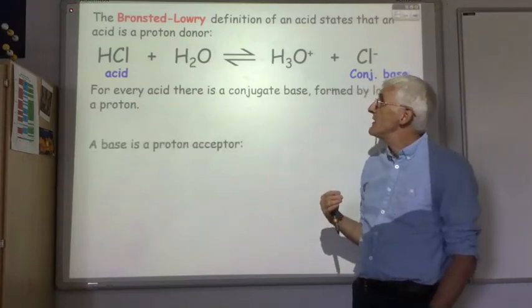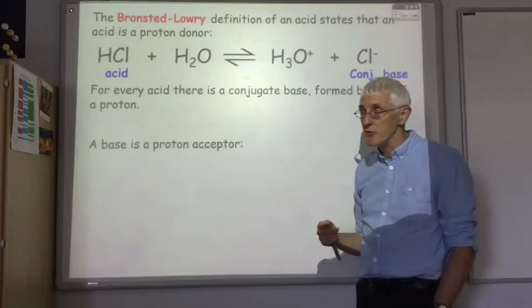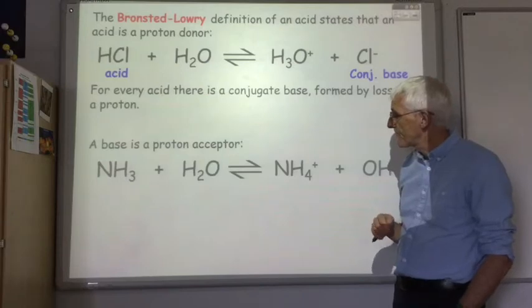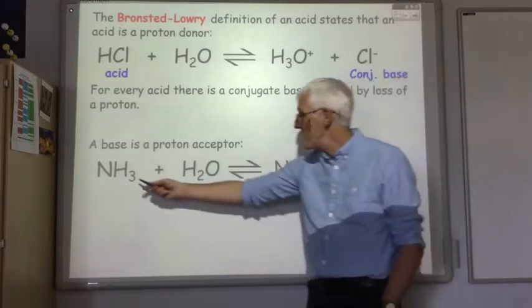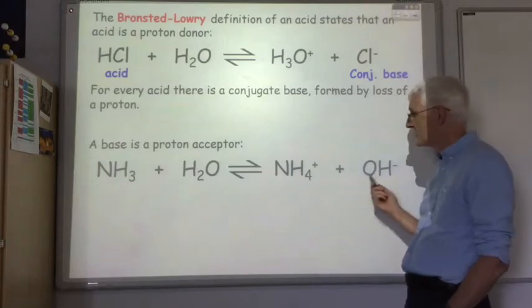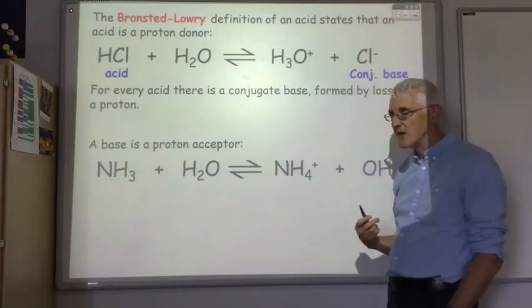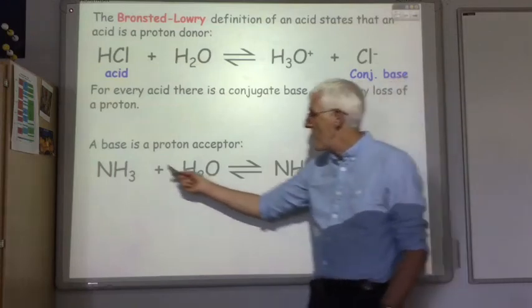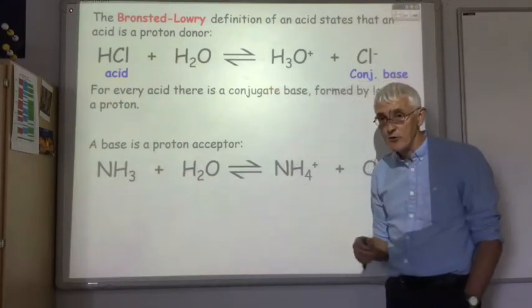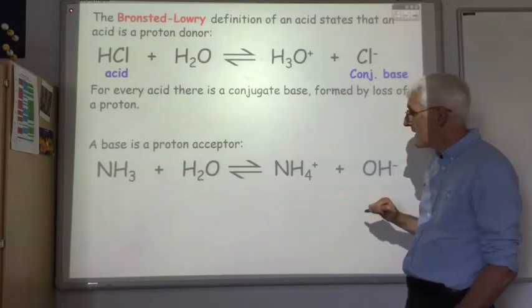Using the same theory, a base is something which accepts protons. So if we look at this example we've got ammonia here and water and we're producing ammonium ion and the hydroxide ion. So what's accepting the proton? Well the NH3 has accepted the proton to become the NH4+ ion. So that makes NH3 the base.